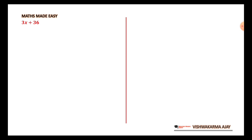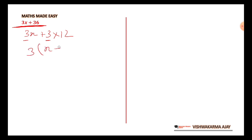Here is our first question. This is not a quadratic equation but a warm-up question on factorizing. How can we write 3x + 36? We can write it as 3x + 3×12. Now you can see that 3 is a common factor, so we take 3 out: 3(x + 12). So 3 and (x + 12) are the two factors for 3x + 36.